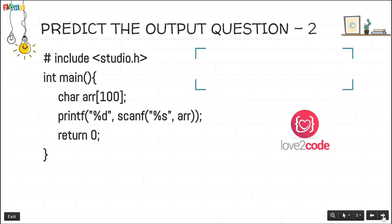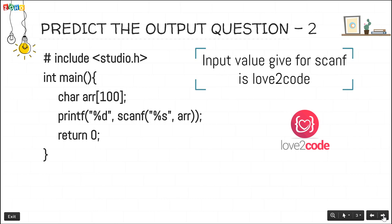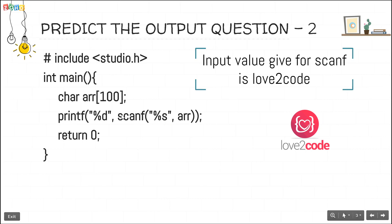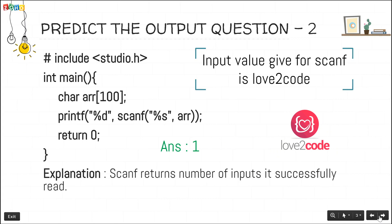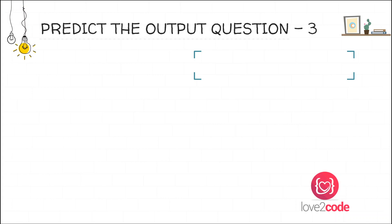The second question has a character array of size 100. Inside a printf statement they are calling scanf. The input value given for scanf is "allowtocode", which is a string. That string is stored in the character array arr. scanf returns a value, which is then printed. In this case it returns 1, because scanf returns the number of inputs it successfully read — so the output will be 1.